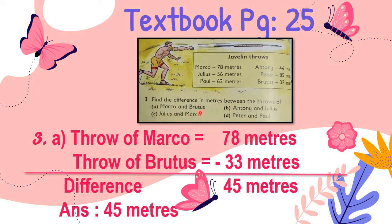You have to subtract the meters between Marco and Brutus, which are 78 and 33. The throw of Marco is 78 meters and the throw of Brutus is 33 meters. Subtracting 33 from 78, the difference between 33 and 78 is 45. So the answer is 45 meters.